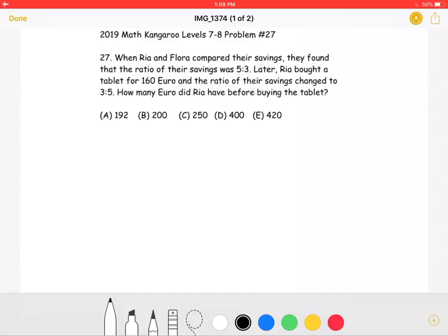When Rhea and Flora compared their savings, they found that the ratio of their savings was 5 to 3. Later, Rhea bought a tablet for 160 euro, and the ratio of their savings changed to 3 to 5. How many euro did Rhea have before buying the tablet?